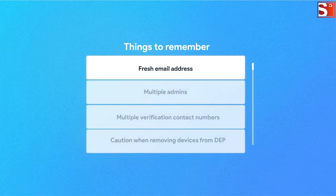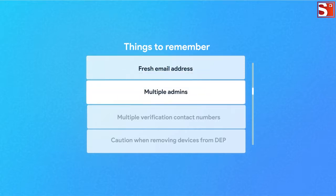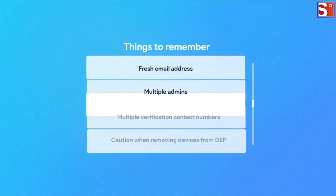There are a few things to remember. Use a fresh email address — the email you provide will be used to create a new Apple ID, so make sure it is not already associated with any other Apple services. It would be better to use a group email instead of a personal email address. Add multiple admins in case the one person who manages the company DEP account is unavailable — add more than one admin to manage the account.